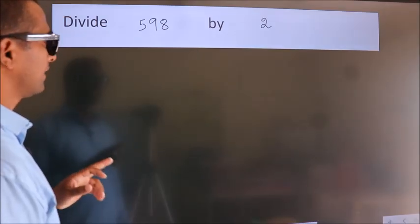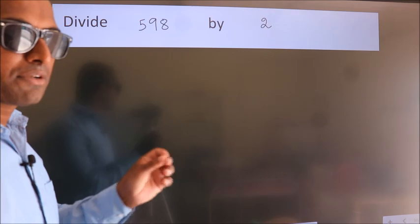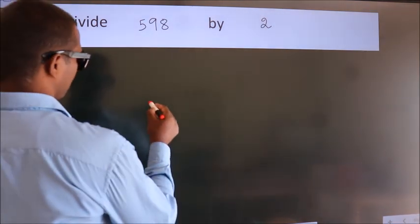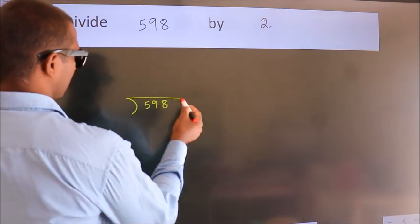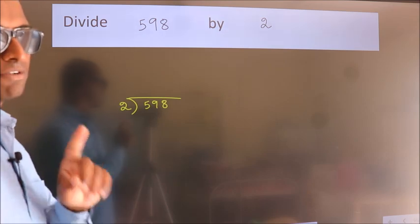Divide 598 by 2. To do this division, we should frame it in this way. 598 here, 2 here. This is your step 1.